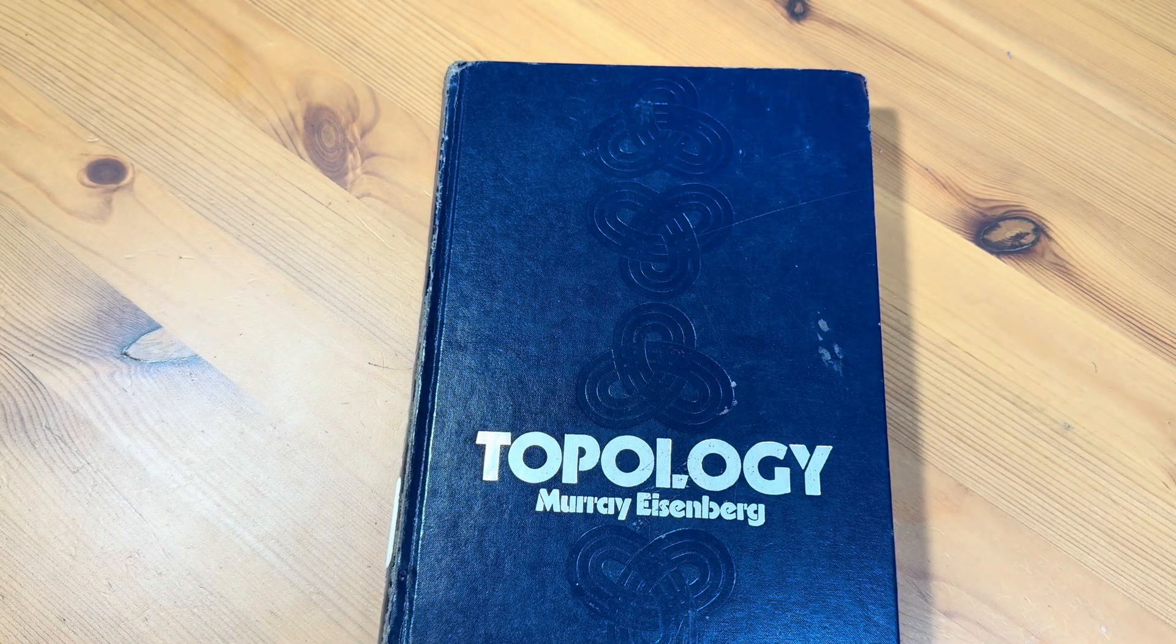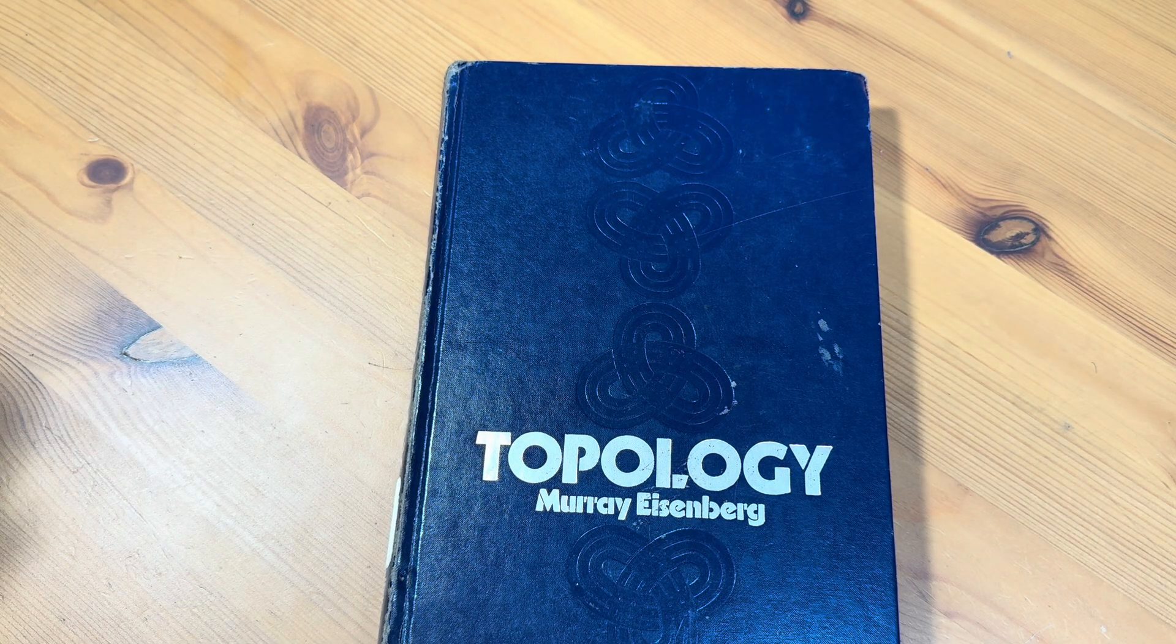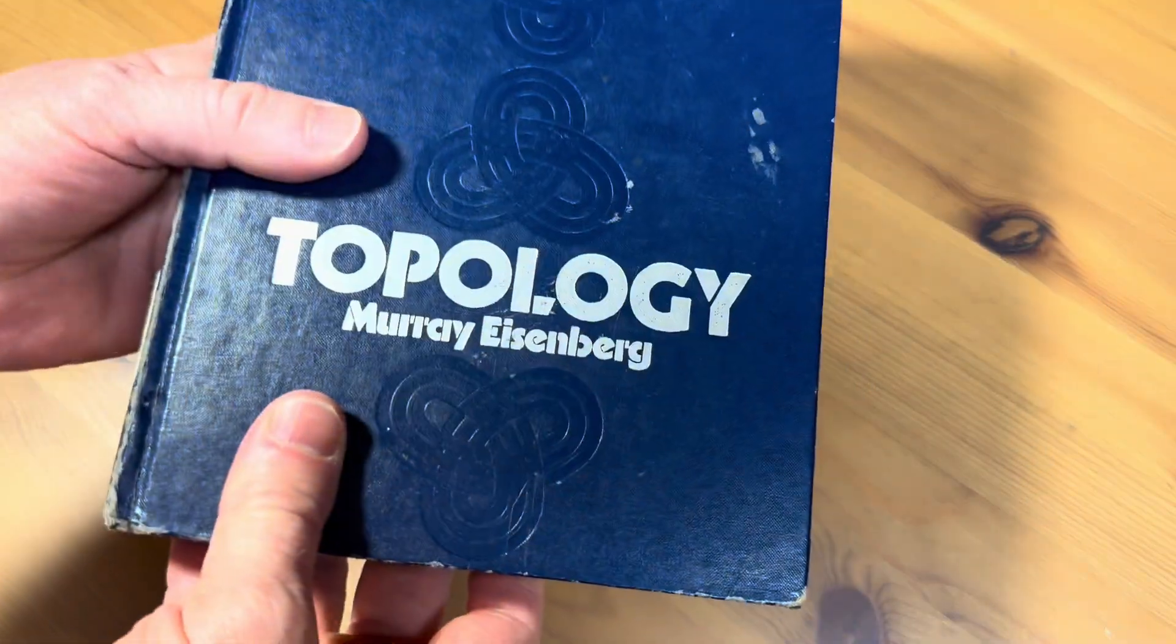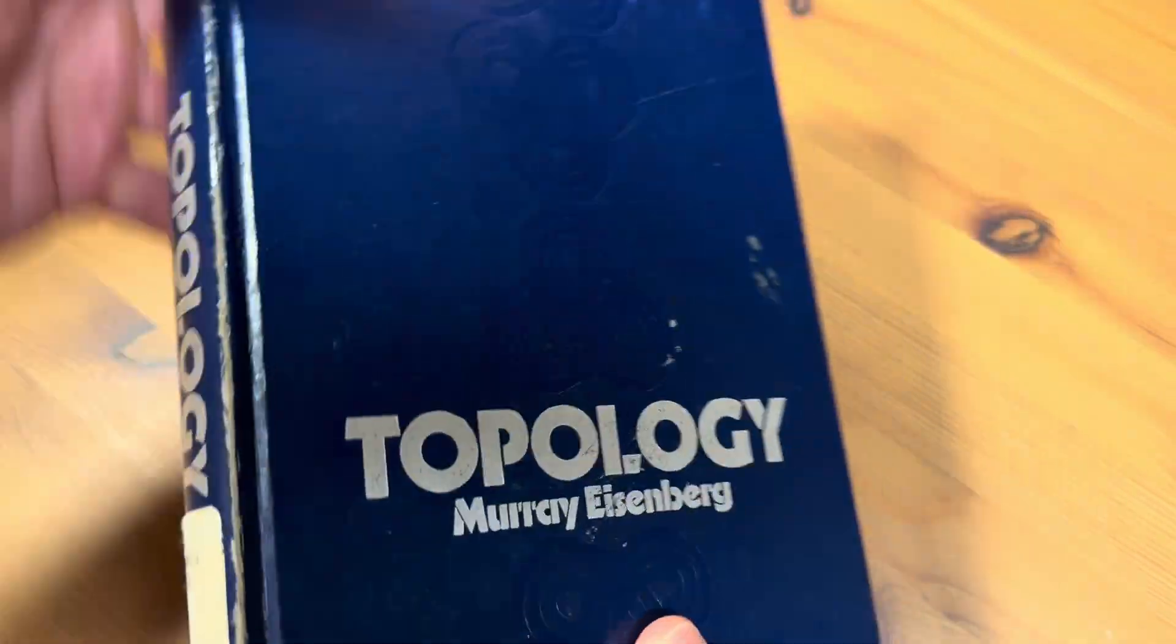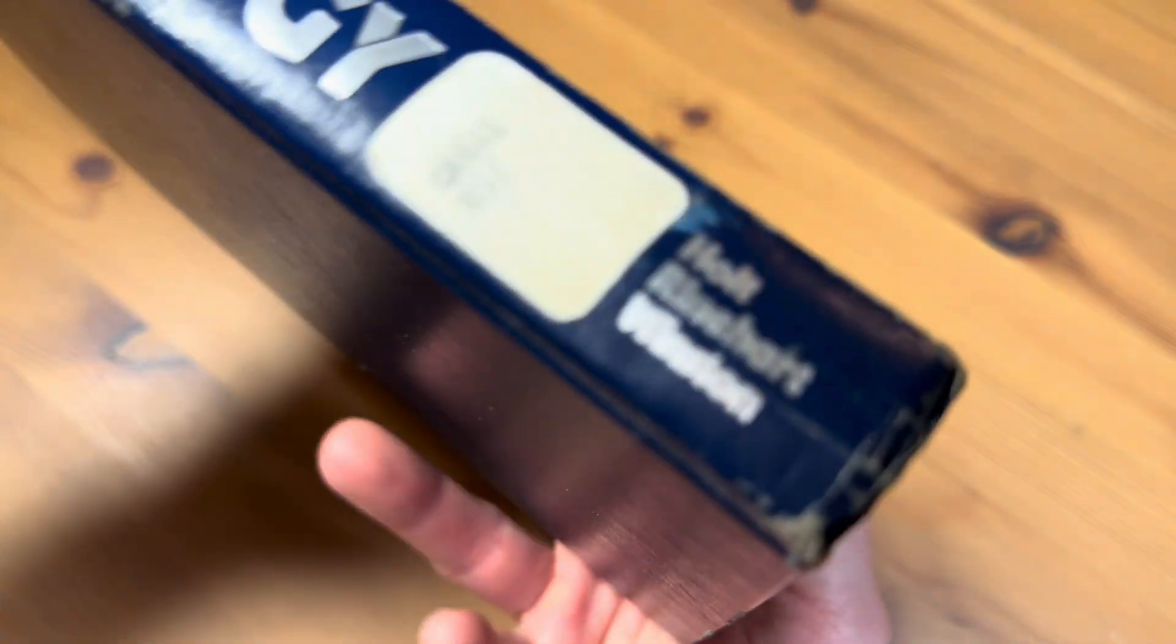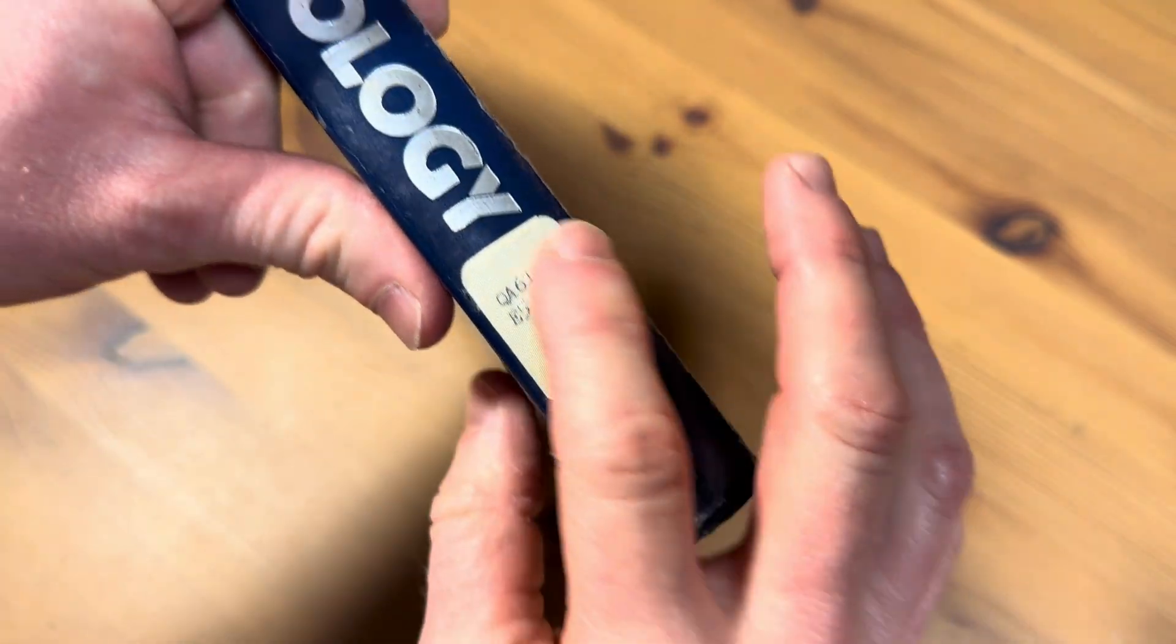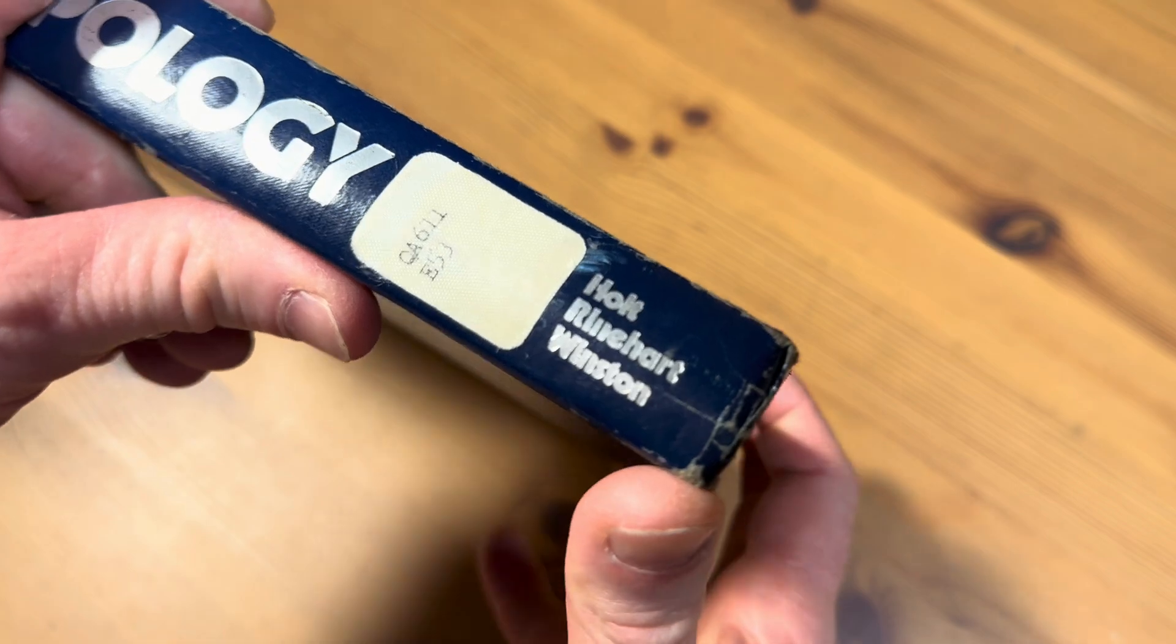Hello, in this short video we're going to take a quick look at this book. It is called Topology and it was written by a man named Murray Eisenberg. This is an older book.